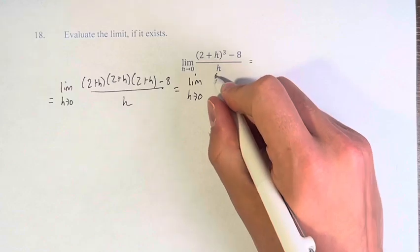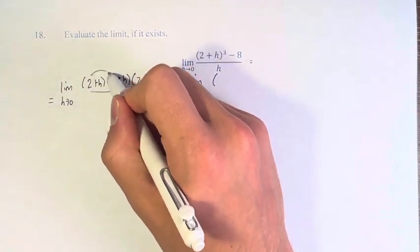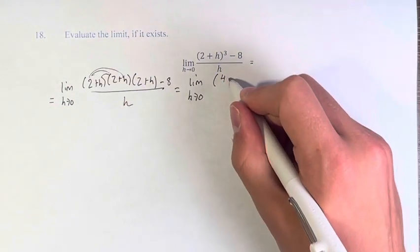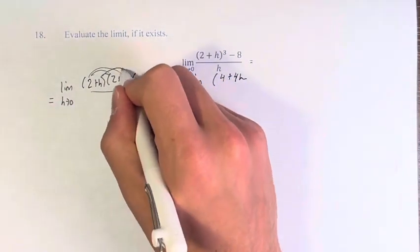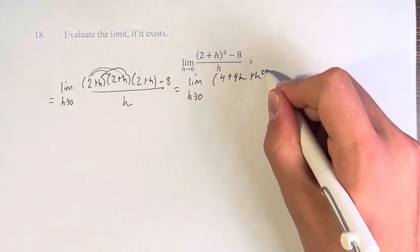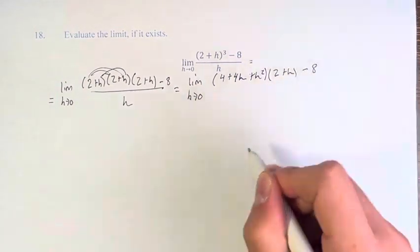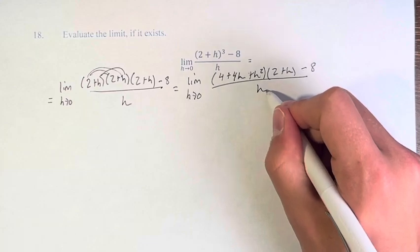And now we just have to distribute this out. So multiplying these first two together, we get 4 plus 2h plus another 2h is plus 4h plus h² times (2+h) minus 8 over h.